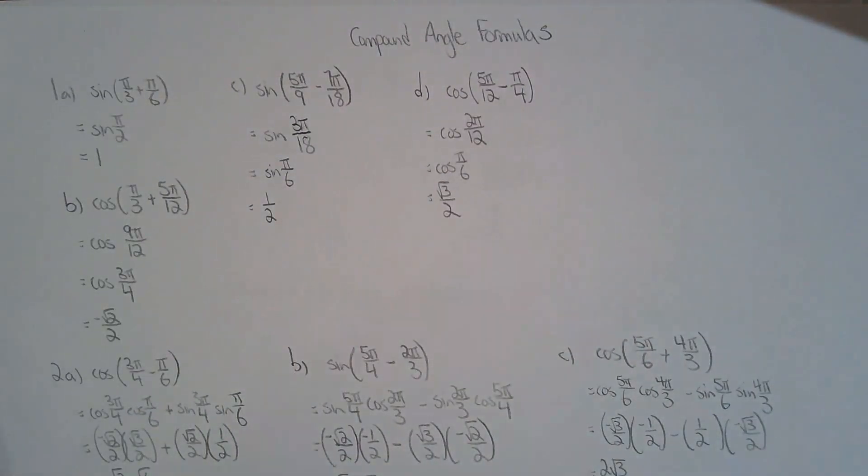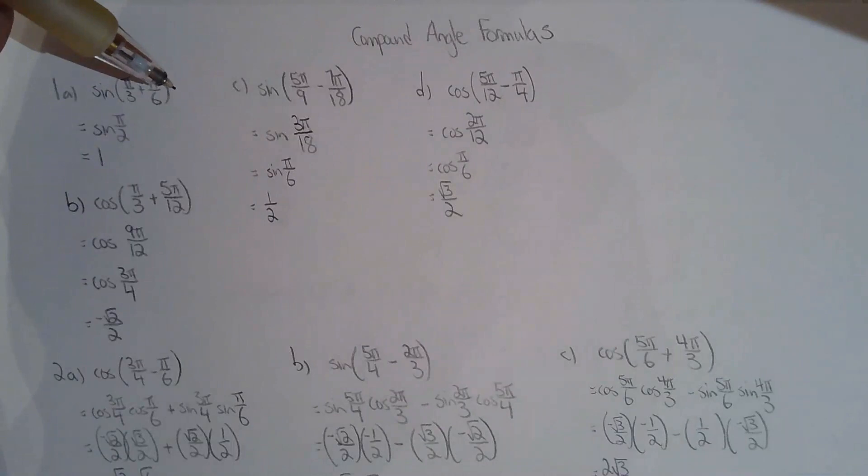So the first question I have to simplify or express as a single trig function. When you look at the question, you need to know which identity or which compound angle formula to use. So 1a, I'm going to use the addition formula for sine. And now you have to just figure out what sine of pi over 2 is. But that's easy. That's one of your special angles.